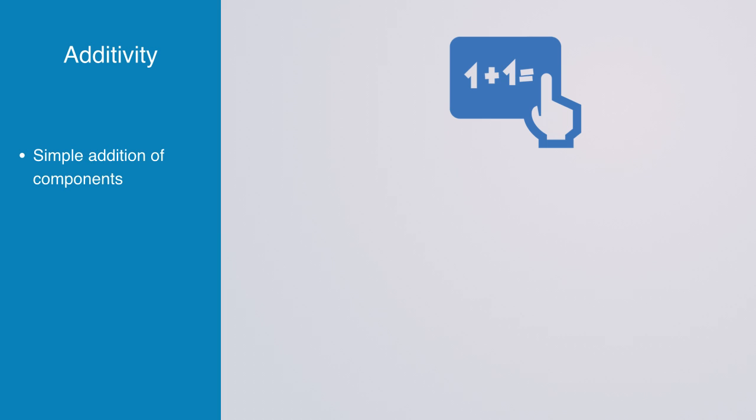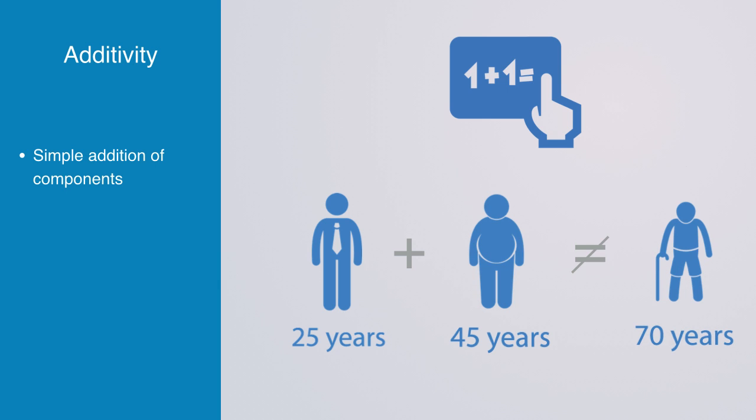Starting with additivity. As we have already discussed, additivity states that when we put two or more components together, the resulting combined system will be nothing more than a simple addition of each component's properties in isolation. The additivity principle, as attractively simple as it is, breaks down in non-linear systems.